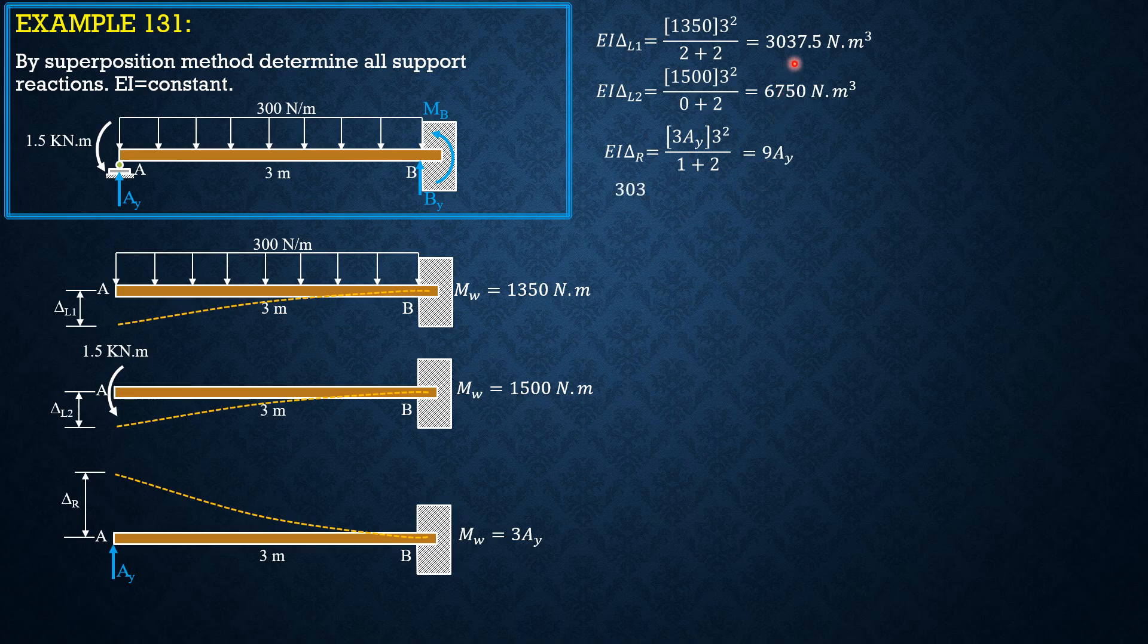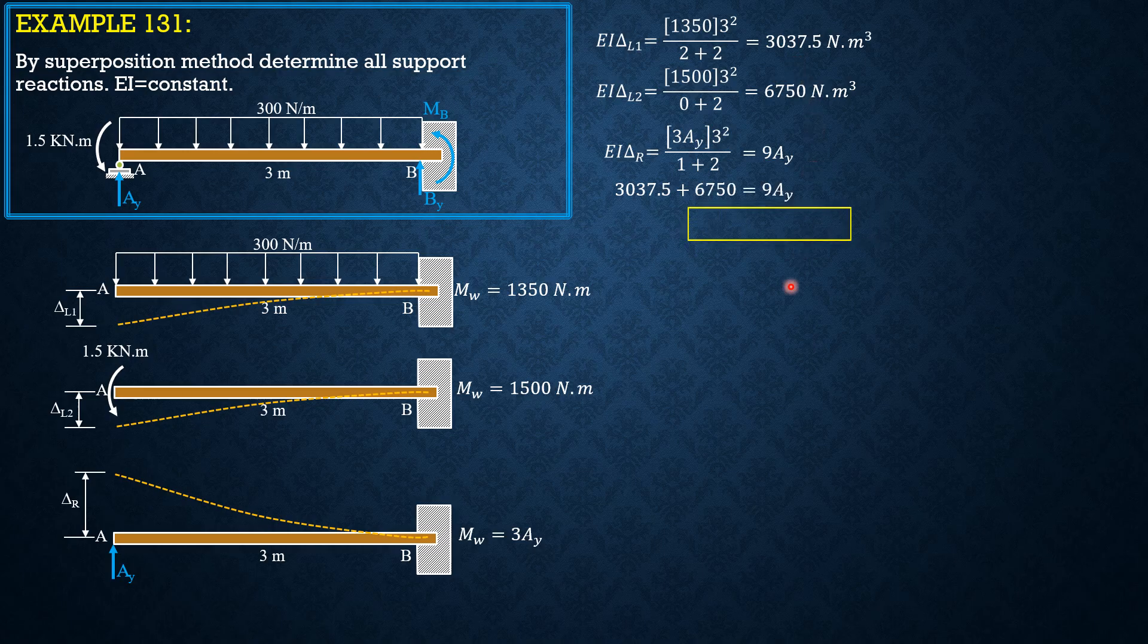So equating 3,037.5 plus 6,750 equals 9AY. So from there, we can solve AY. It is equal to 1,087.5 Newtons.